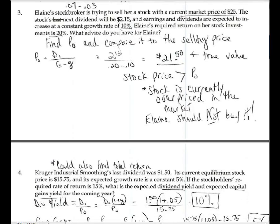Number three: Elaine's stock broker is trying to sell her stock with a current market price of $25 a share. The stock's next dividend will be $2.15, and earnings and dividends are expected to increase at a constant growth rate of 10%. Elaine's required rate of return is 20%. Notice a 10% growth rate is probably pretty optimistic and quite high. A higher growth rate does correlate with a higher required rate of return, though everything is subjective with stock valuation. Your question is: what advice do you have for Elaine?